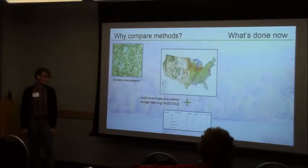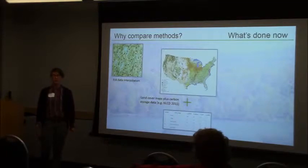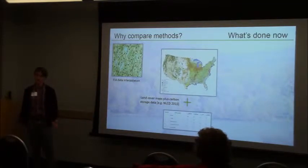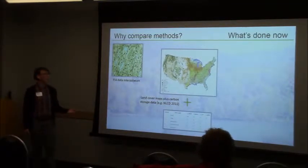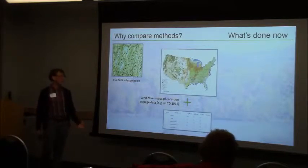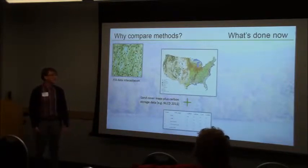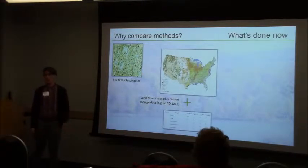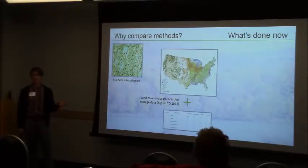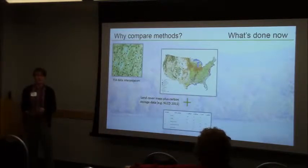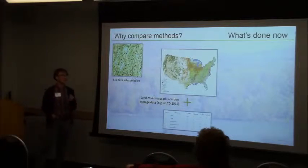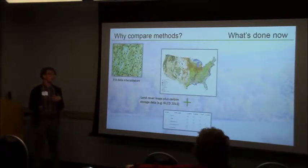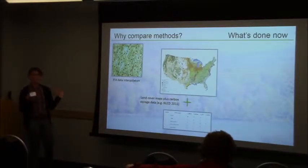Another way is to take land cover maps and use different land cover types with standard carbon values to calculate how much carbon is stored across the entire landscape. This can work well, but the problem is that most land cover maps are pretty coarse. NLCD has categories for deciduous, evergreen, and mixed forests. A lot of other land cover maps just say 'forest.' So if you want to look at a more regional scale, this isn't going to help you very much.